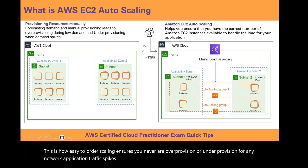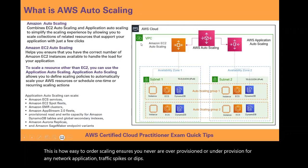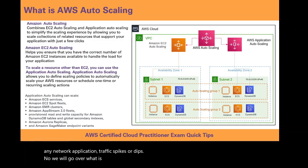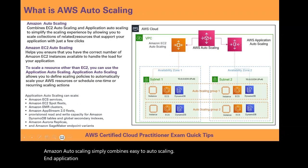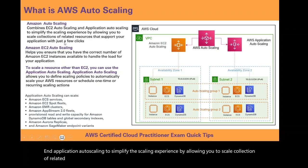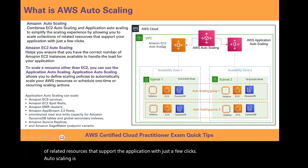Now we will go over what is Amazon Web Service autoscaling. AWS autoscaling simply combines EC2 autoscaling and application autoscaling to simplify the scaling experience, allowing you to scale a collection of related resources that support your application with just a few clicks. Autoscaling is one level on top of EC2 autoscaling and also introduces application autoscaling.